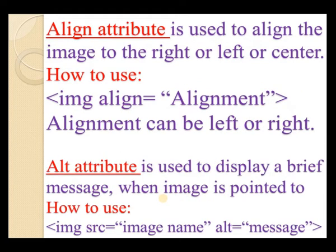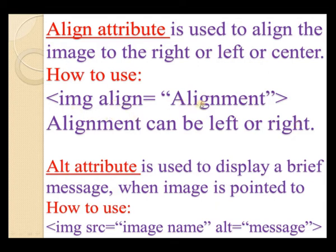Next is the align attribute. The align attribute is used to align the image to the left, right, or center. The syntax is: img align equal to alignment value. The alignment can be left or right. Writing img align equal to left places the image on the left side; img align equal to right places it on the right side.